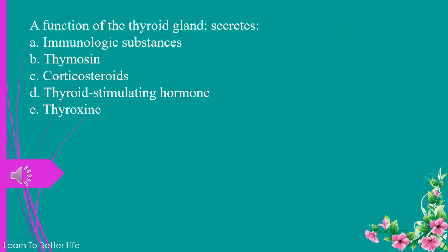A function of the thyroid gland — secretes: a. immunologic substances. b. thymocin. c. corticosteroids. d. thyroid-stimulating hormone. e. thyroxine. The answer is e. thyroxine.